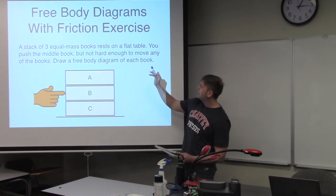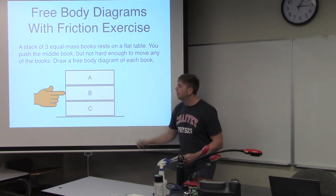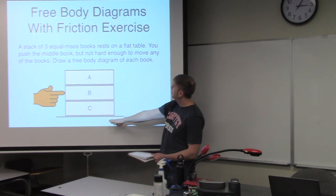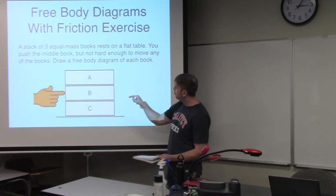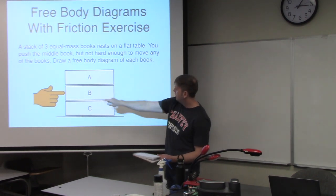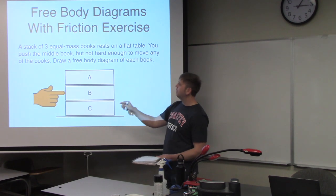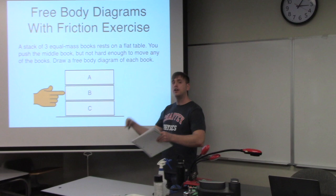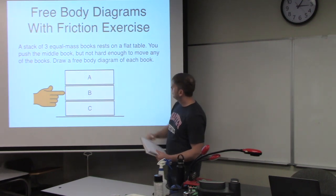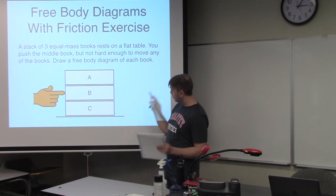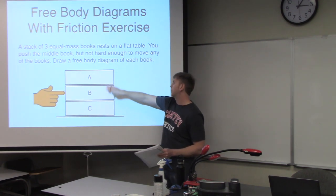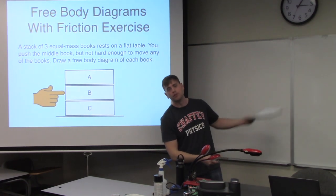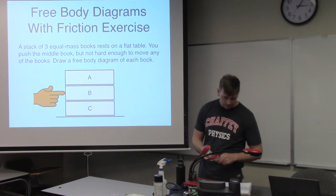This example is all about drawing free body diagrams when friction forces are involved. We have a stack of three equal-mass books resting on a flat table. You push the middle book horizontally, but not hard enough to actually move any of the books. Since no books are moving, static friction is involved. Our job is simply to draw the free body diagram of each book — A, B, and then C.